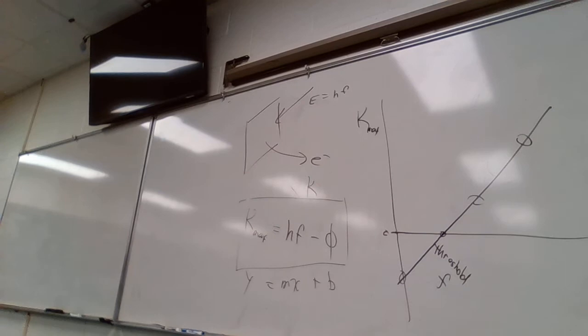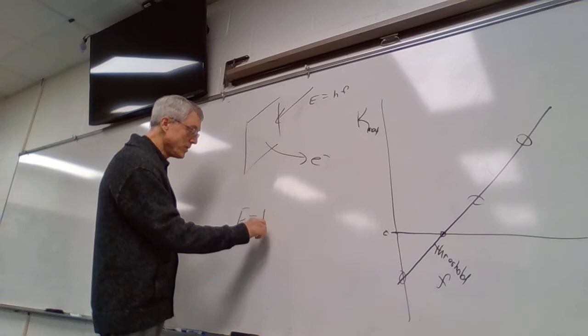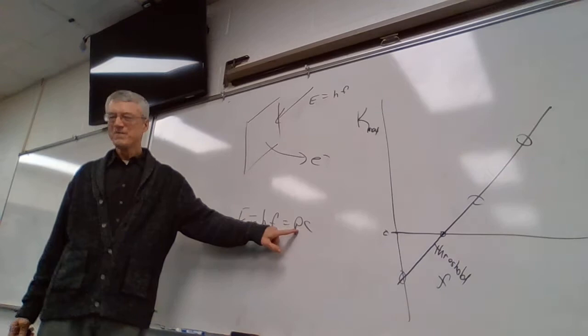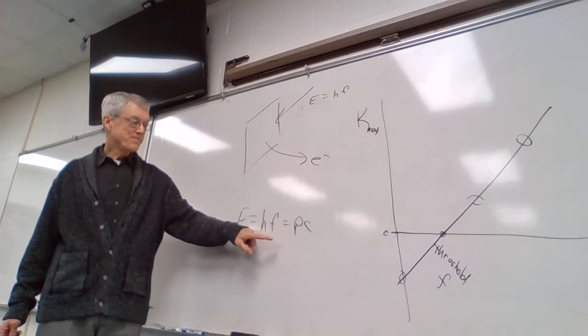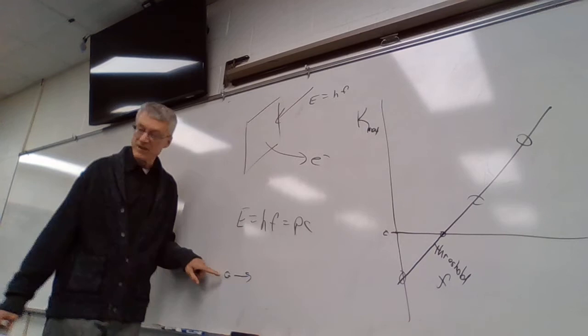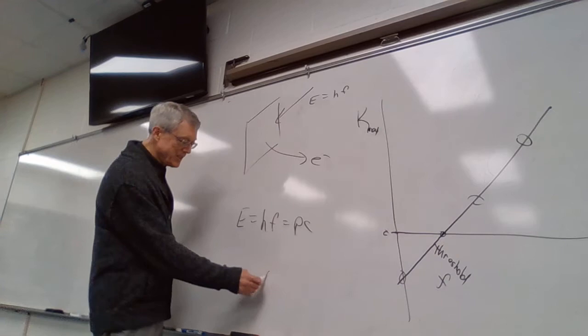Moving on. The next thing is that energy equals hf, but it's also equal to pc. You will get questions about the momentum of a photon. This p is momentum, and this is not on your equation sheet. Photons have no mass but they carry energy — a little bundle of energy moving at the speed of light. How much energy? hf.